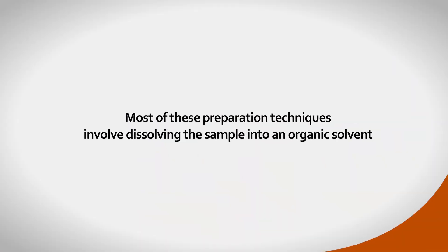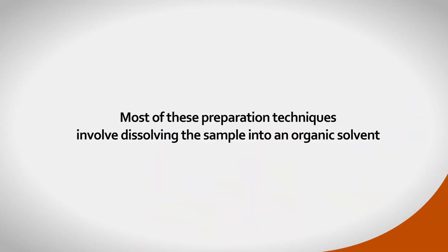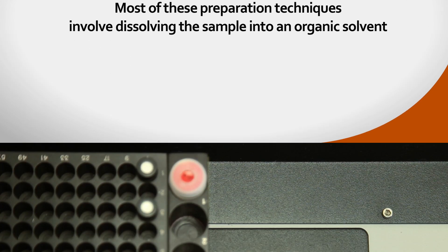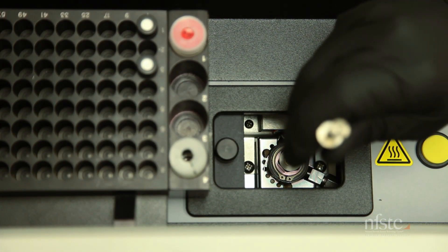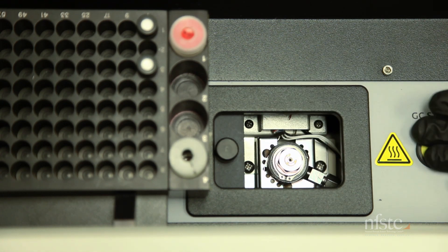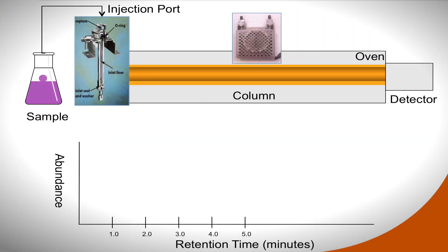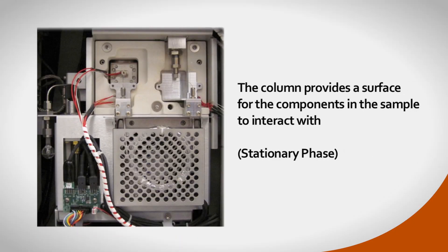Most of these preparation techniques involve dissolving the sample into an organic solvent. After sample preparation, a microliter amount of the prepared liquid sample is injected into the injection port of the GC device, where it's immediately volatilized and mixed with a carrier gas. This gas serves to move or push the solutes forward down the capillary column in what is known as the mobile phase.